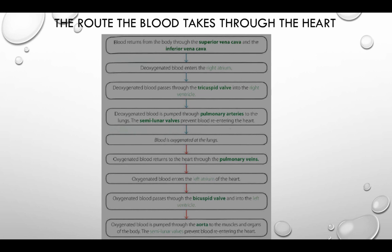The route the blood takes through the heart. Blood returns from the body through the superior vena cava and the inferior vena cava. The deoxygenated blood enters the right atrium, then passes through the tricuspid valve into the right ventricle. Deoxygenated blood is then pumped through the pulmonary arteries to the lungs. The semilunar valves prevent blood re-entering the heart.